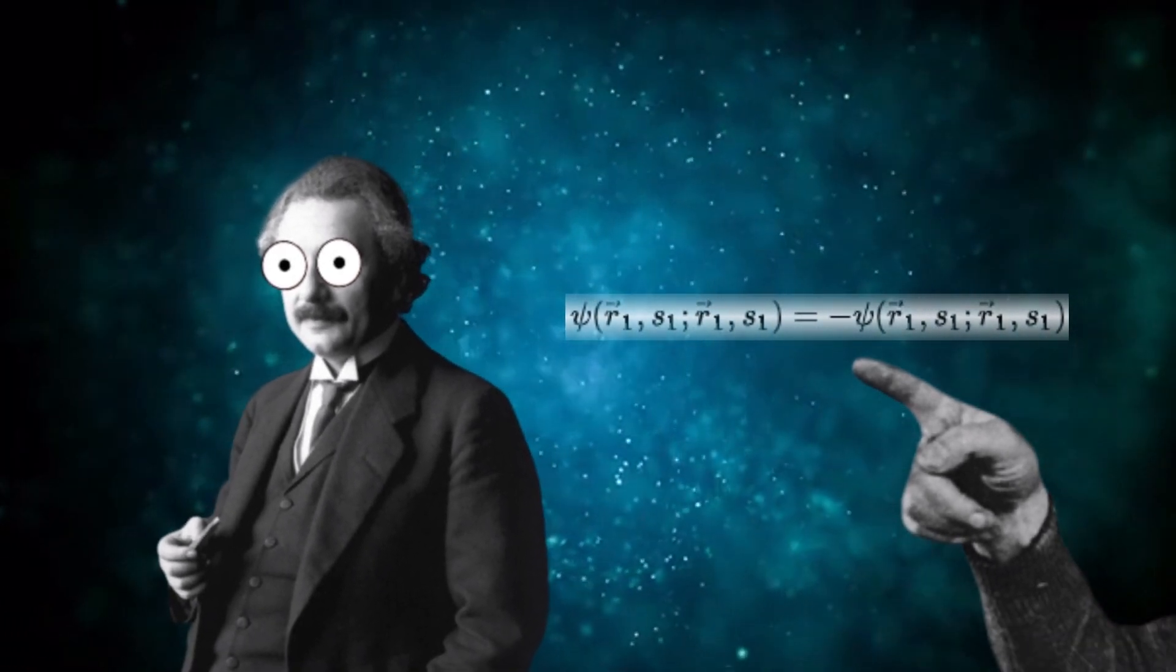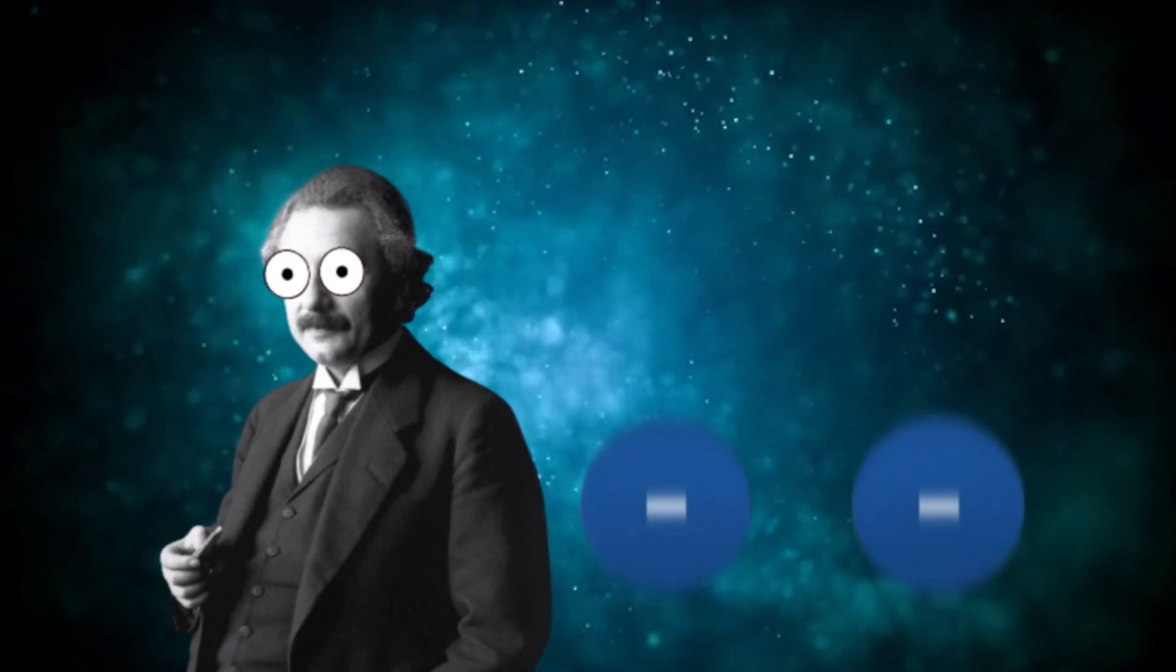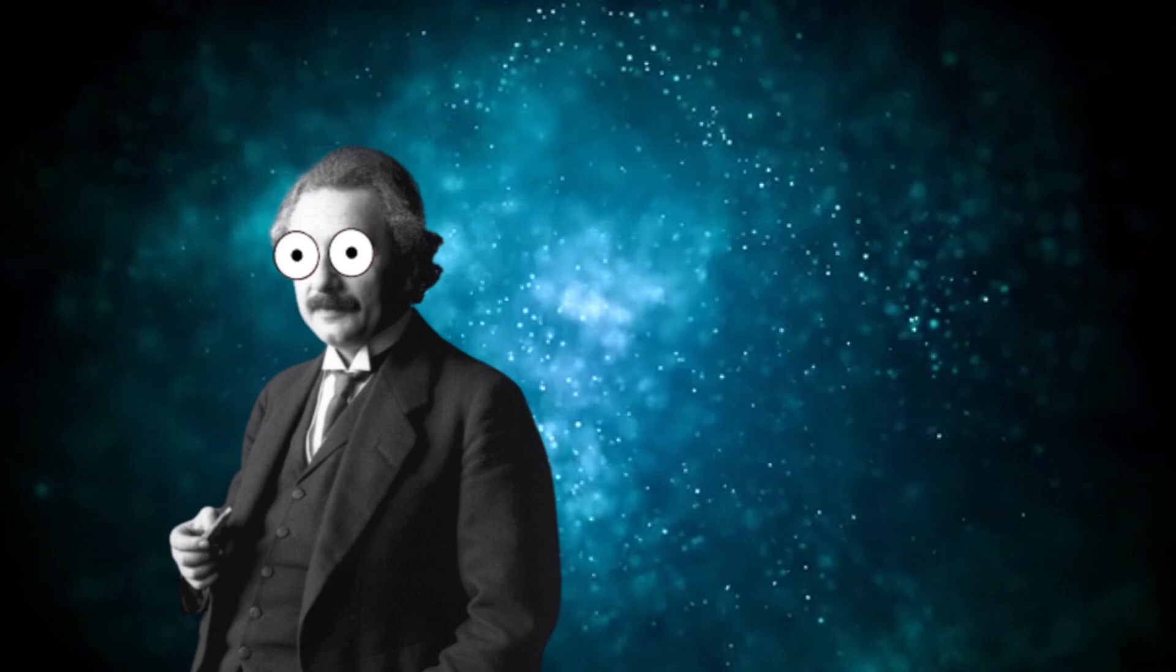So there you go. Now you know that the Pauli Principle explains why there are always two electrons in the first shell, or rather, first orbital.